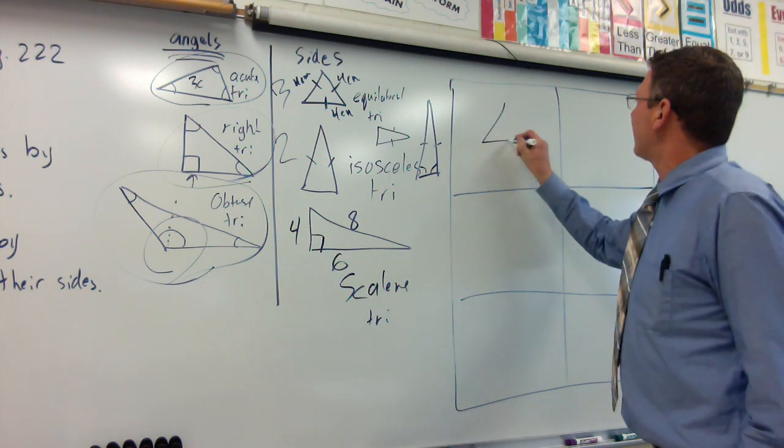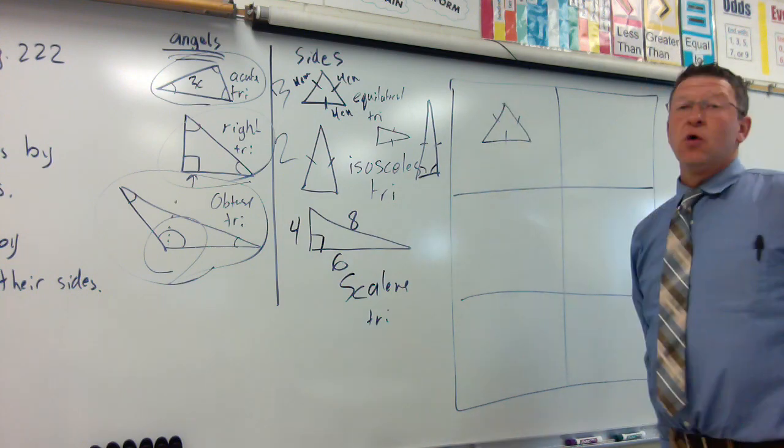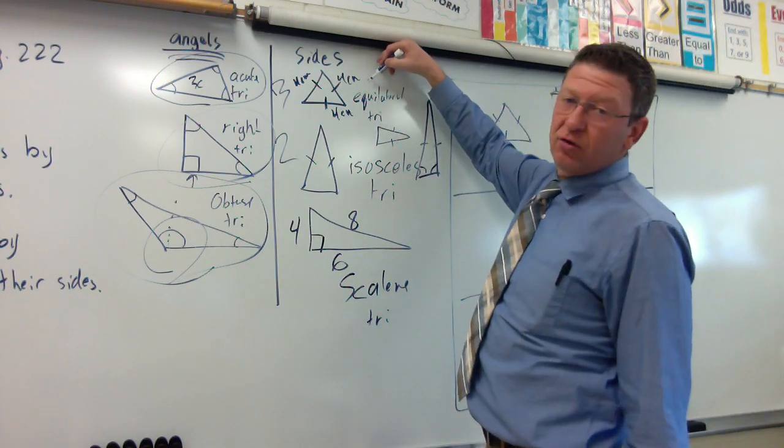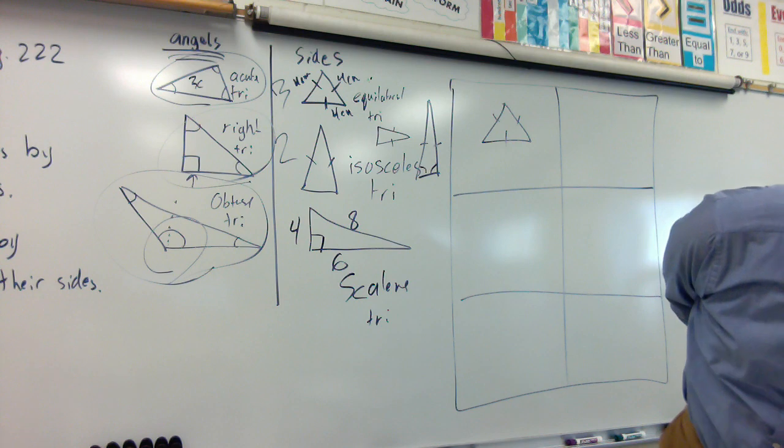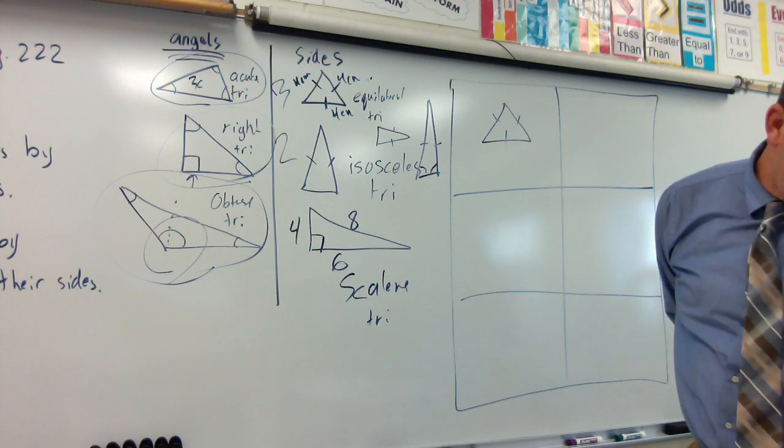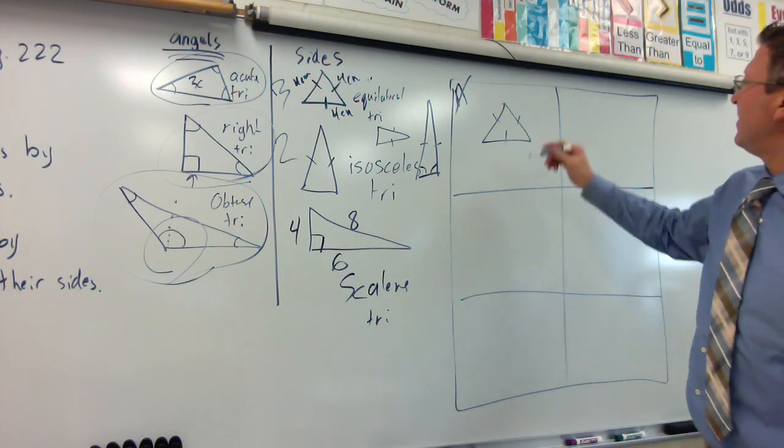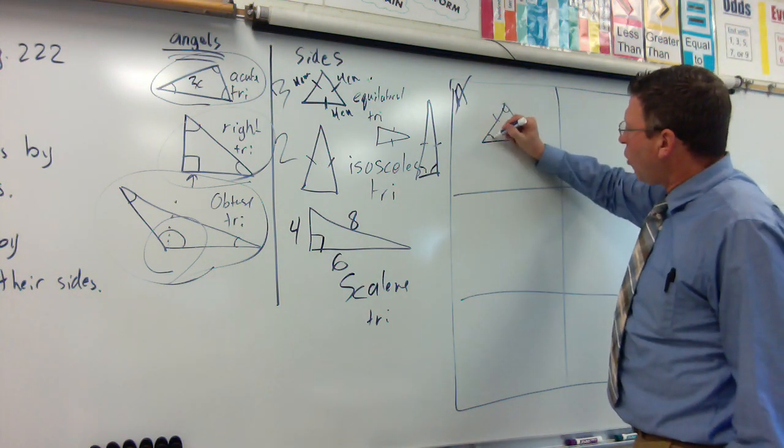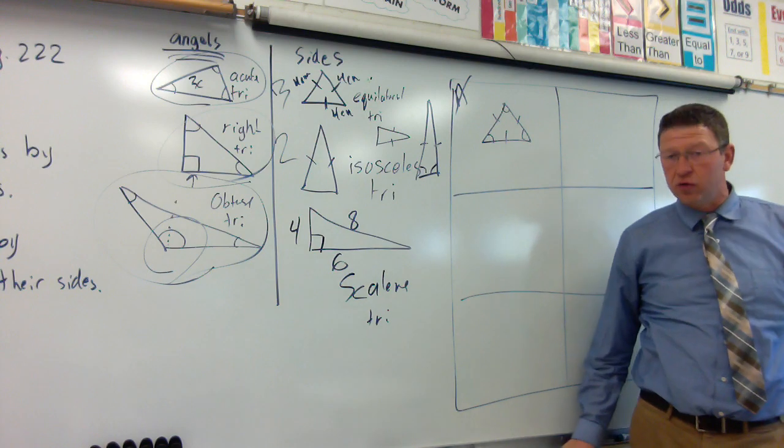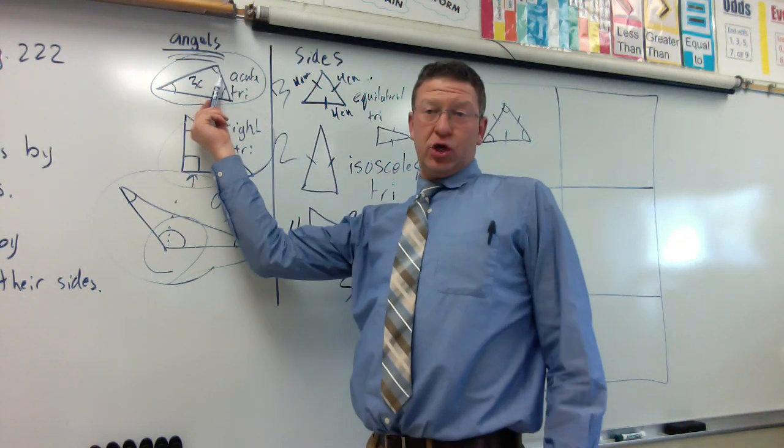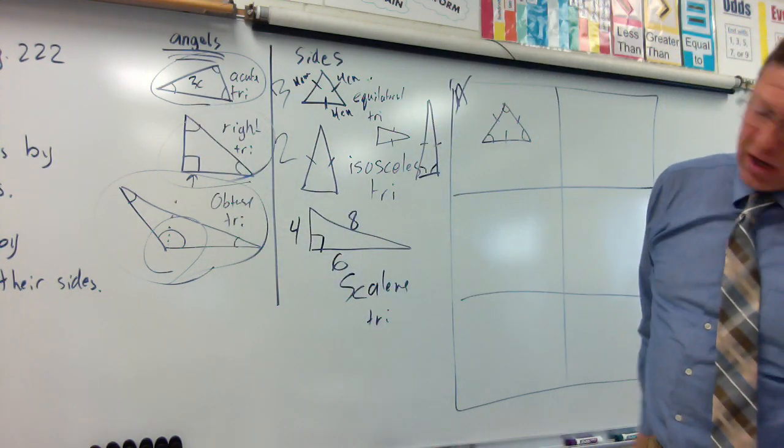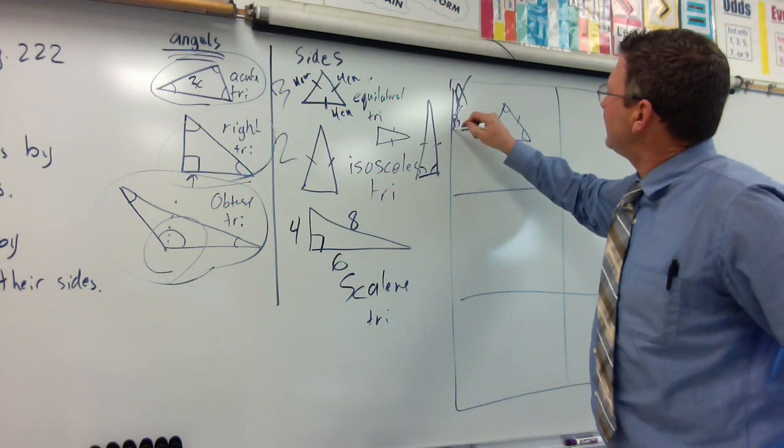Which of the following terms could not describe the triangle? Well, if the three sides are all the same, one, two, three, we know that that's got to be an equilateral triangle. So, equilateral is A. So, A is out. Now, if all three sides are the same, that also makes all three angles acute. So, it also could be an acute triangle. Acute is B. So, B is out.